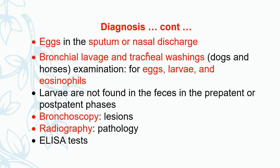On examination of sputum and nasal discharge under the microscope, the clinician can find eggs. Examination of bronchial lavage and tracheal washings in dogs and horses allows the clinician to examine for eggs, larvae, and eosinophils. Note that larvae are not found in feces in the pre-patent phase. In post-patent feces, the adults are expelled out so there are also no eggs in the feces — the post-patent phase is a recovery phase.